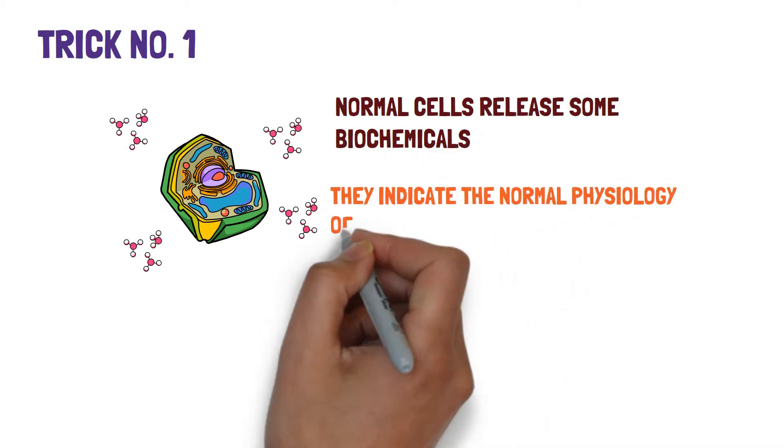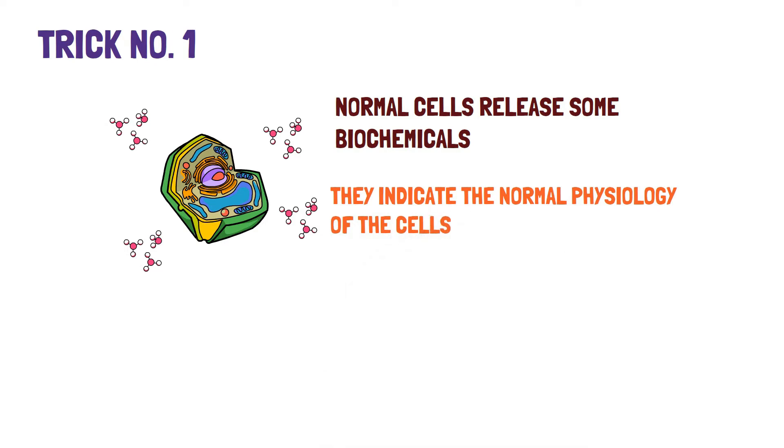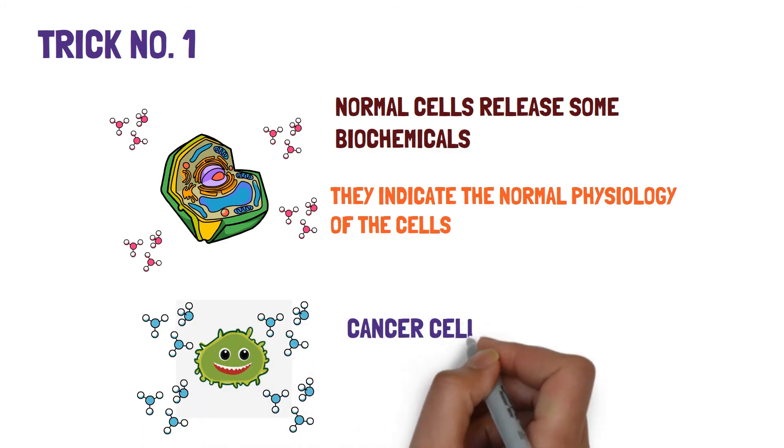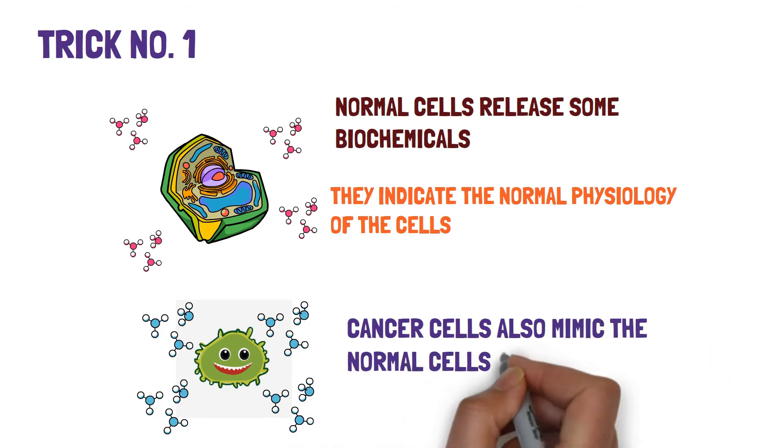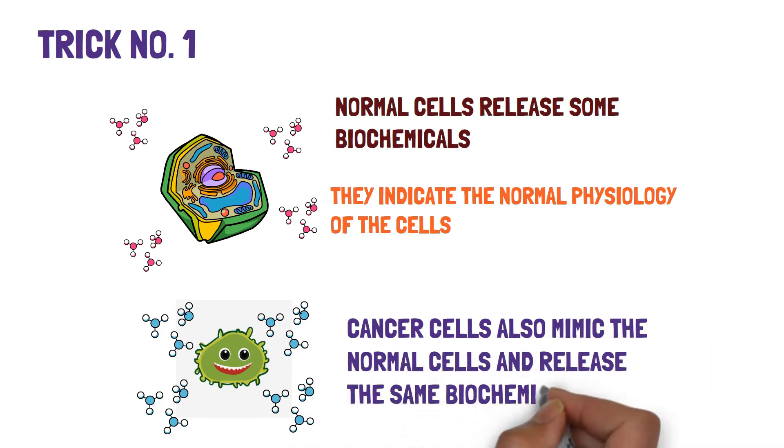The biochemicals prevents the cell from undergoing self-destruction because while working abnormally they are designed to self-destruct. Even though the cancer cells are rapidly multiplying abnormal cells they also release these same biomolecules which prevents them from self-destruction.